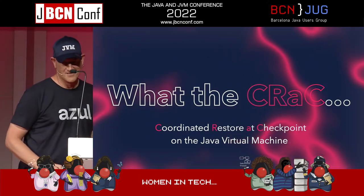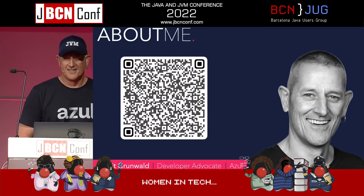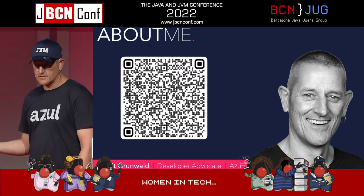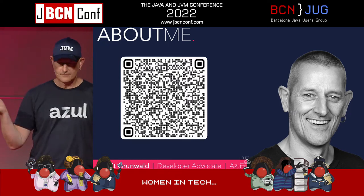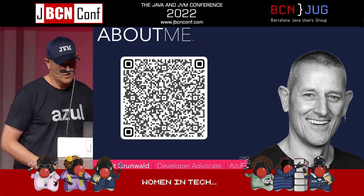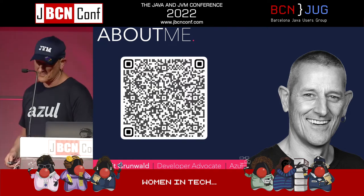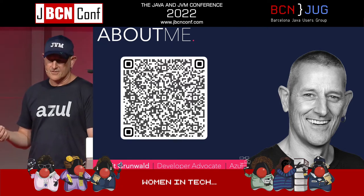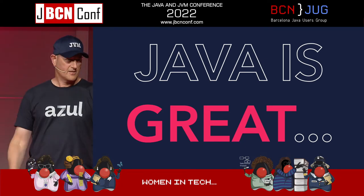My name is Gerrit Grunwald, I'm working for Azul Systems as a developer advocate. I did a lot of front-end work in the past 10 years and I'm now happy to be working on the back-end side and on the JVM side.